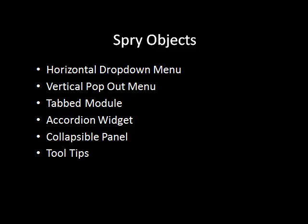Some of these spry objects are great for navigation of an entire site; some are just used to present content on a page. For example, Dreamweaver can create a tab module so you can have lots of content on one page organized within different tabs. We also have the accordion widget, the collapsible panel, and then the tooltips — which is what's going to give us functionality similar to the People of Influence image we saw earlier, where you hovered over a piece of the image and it showed you the name of the person of influence.